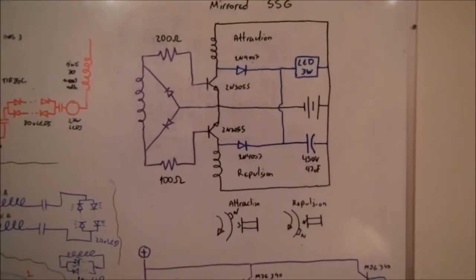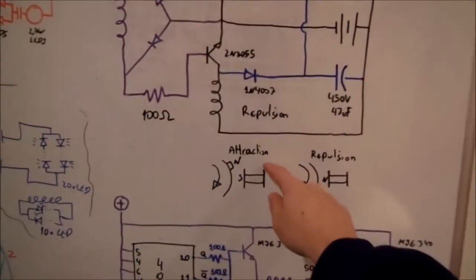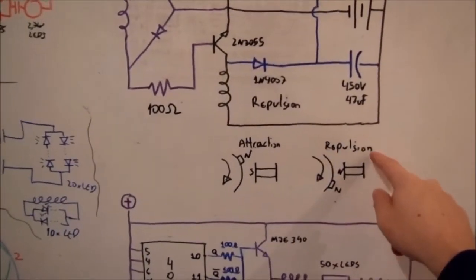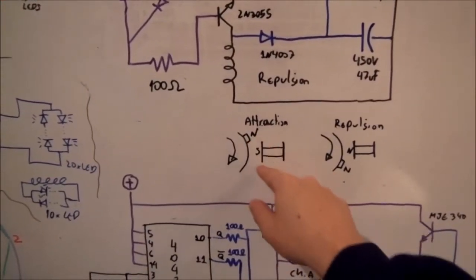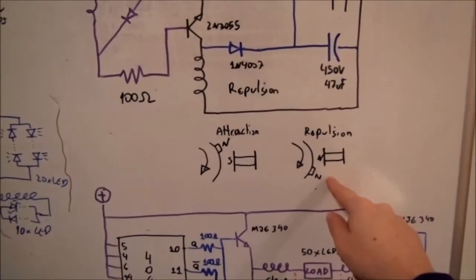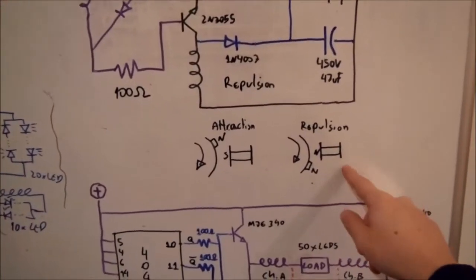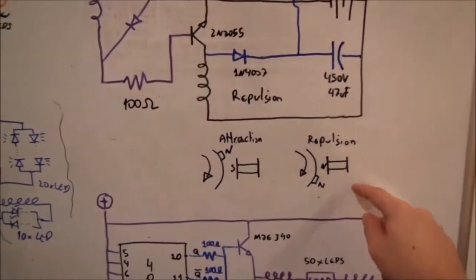The idea behind this is that the standard SSG only works in attraction or repulsion mode. So you need to choose if you want to work when the magnet is coming to the coil or when the magnet is leaving the coil. Most of the time people choose to use repulsion mode because it gives a better energy spike.